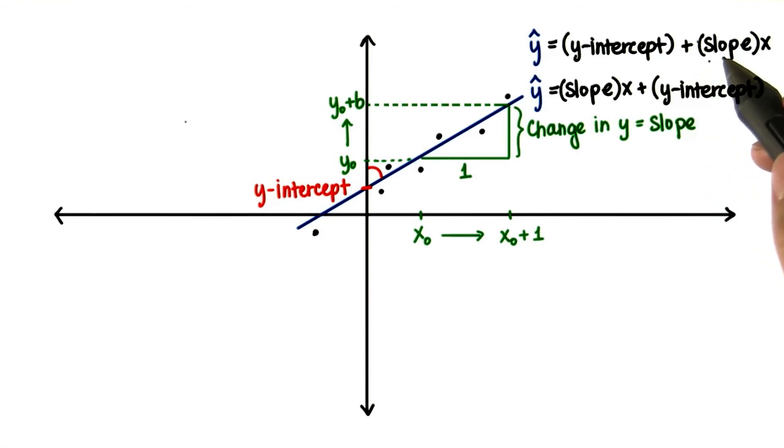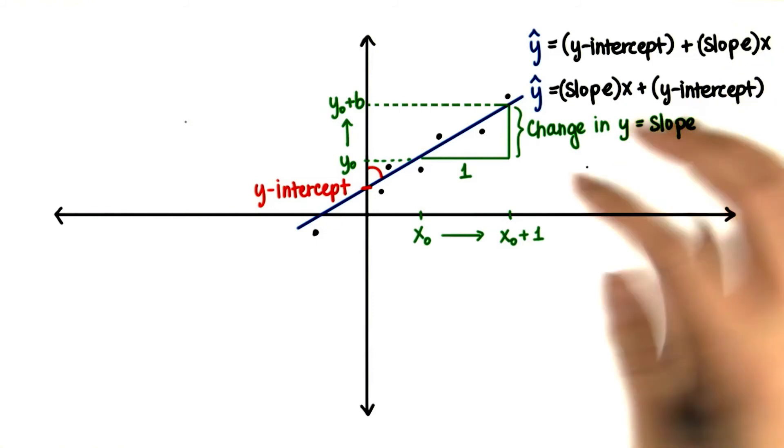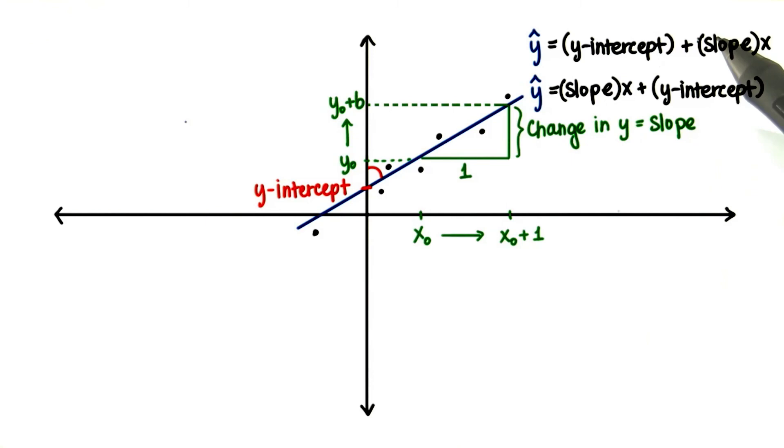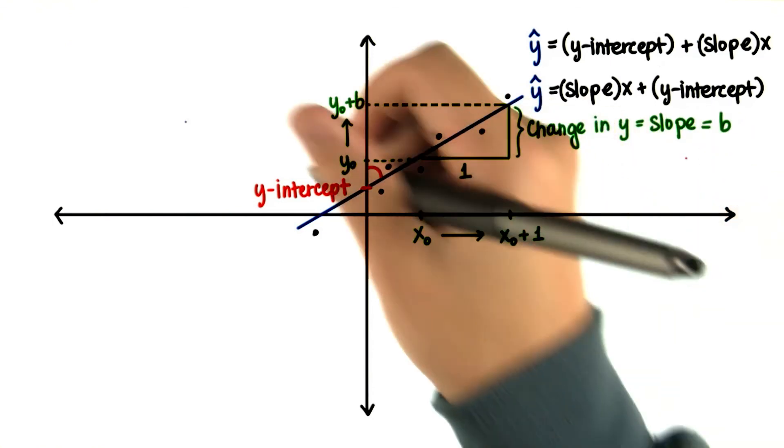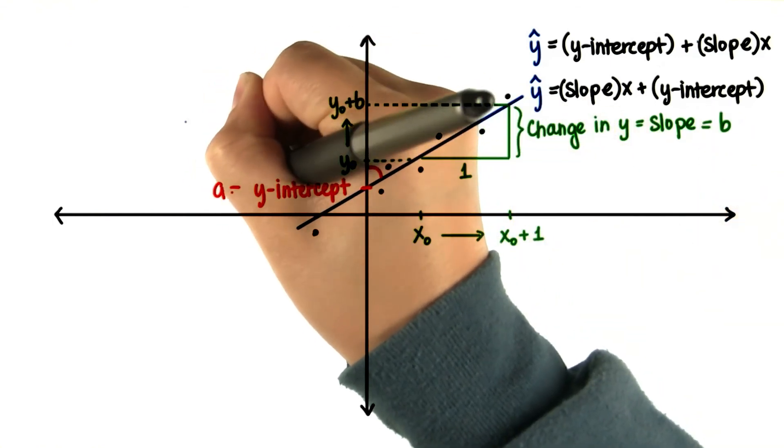The slope and y-intercept are called regression coefficients. And sometimes when we use software to calculate the regression line, they'll present it in this first way. For this lesson, we're going to use b to symbolize the slope and a to symbolize the y-intercept.